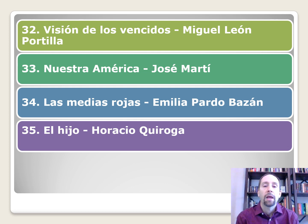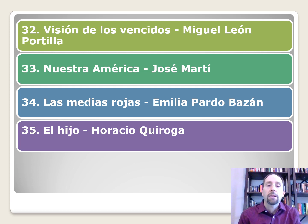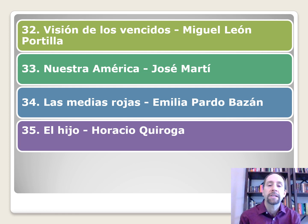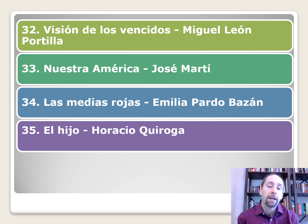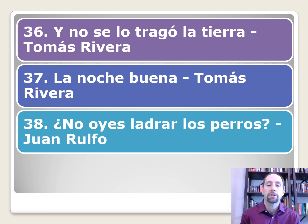Visión de los vencidos, originally written in Nahuatl and translated to Spanish by Miguel León-Portilla — he's the translator, not the original author, but that's the name we go with. Nuestra América by José Martí — it talks about why our America is just as important as the European literary tradition. Las medias rojas by Emilia Pardo Bazán, a kind of sad story. El hijo by Horacio Quiroga, another very sad story. Y no se lo tragó la tierra by Tomás Rivera — 'and the earth did not swallow him.' So he hung in there, and just like you can do for the test, you will make it through.